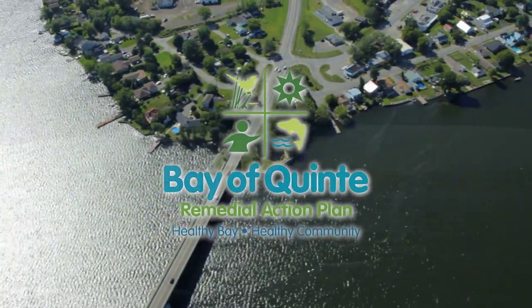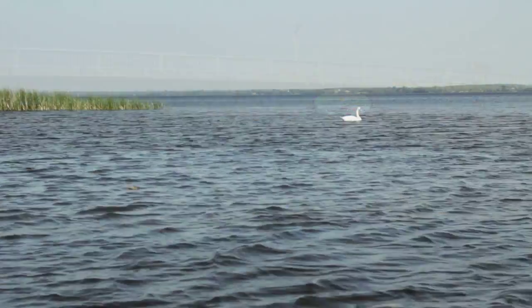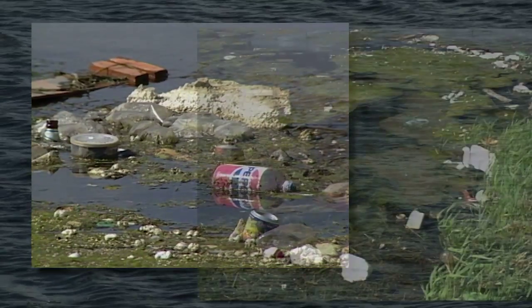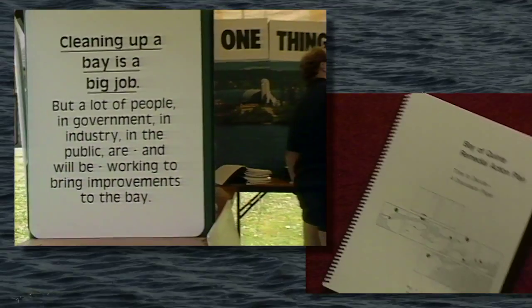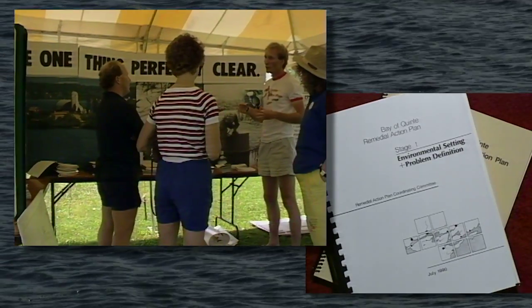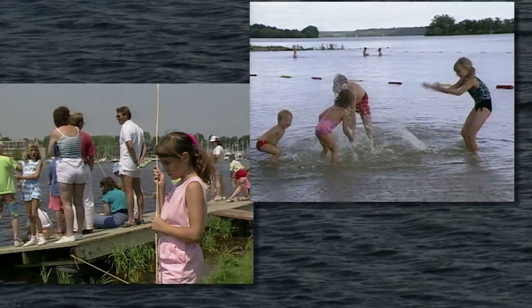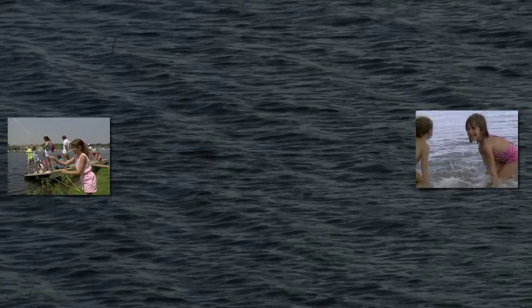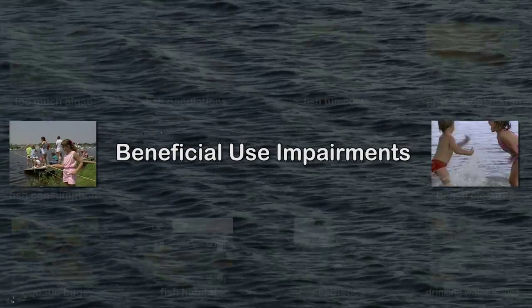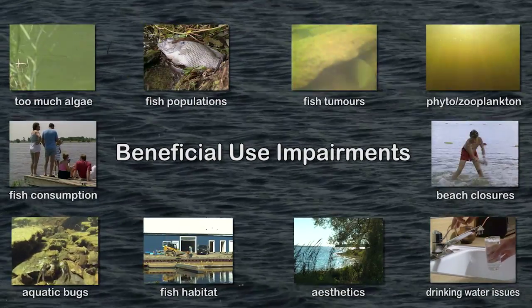The Bay of Quinte Remedial Action Plan is restoring the environmental integrity and the long-term viability of the Bay of Quinte ecosystem. In the early 1990s, environmental damage that had been occurring to the Bay of Quinte for decades was identified and documented in a Remedial Action Plan. This plan identified the environmental challenges that threatened the Bay of Quinte ecosystem and people's use and enjoyment of the Bay. Those environmental challenges were grouped together and called beneficial use impairments. The Bay of Quinte has 10 beneficial use impairments and the Remedial Action Plan implements actions to address them.